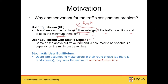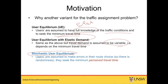In UE with elastic demand, we still assume users have full and perfect knowledge of travel times, but we assume that travel demand is variable and reacts to how much travel times go up and down. If minimum travel time increases, demand will be suppressed; if it goes down, close to 100% of demand gets into the network. But in a stochastic user equilibrium, we assume users make errors in their route choice.